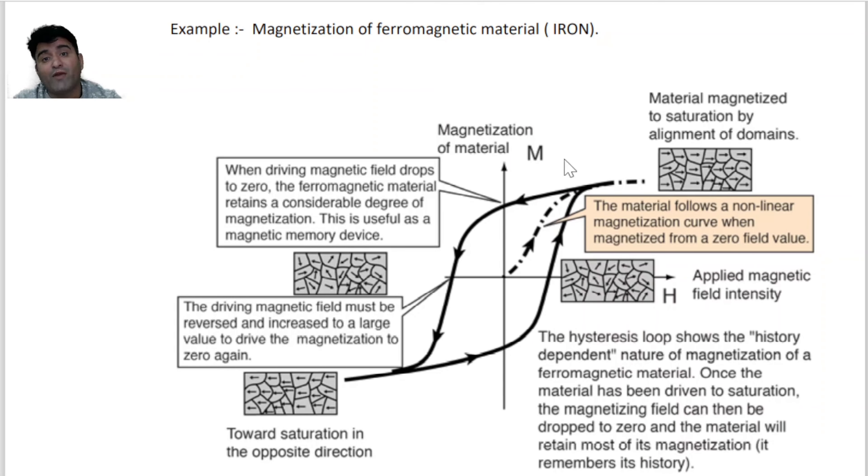Jab humne ferromagnetic material ko external magnetic field me rakha for magnetization, jaise jaise hum magnetic field badhate jayenge, waise waise material magnetize hota jayega. Ek particular value ayegi - at this point the material 100% magnetize ho jayegi and iski value constant ho jayegi. Jitna marzi aage hum magnetic field badhate jayen, iski value constant hi rahegi.